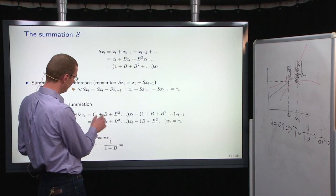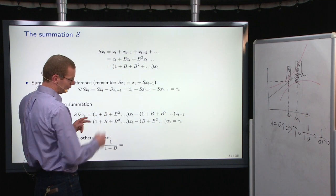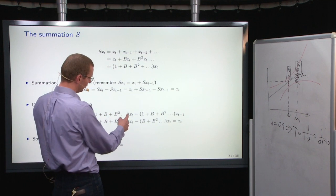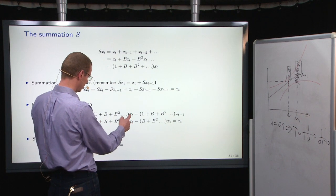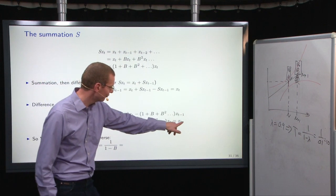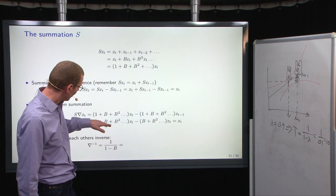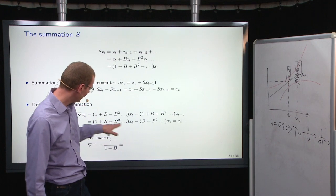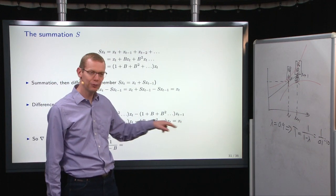It's basically the same thing as what we did before. Now we have the summation here that we apply on x_t and on x_{t-1}. And again, if we compare the different powers of B, we see that everything but the 1 cancels out and we get x_t.